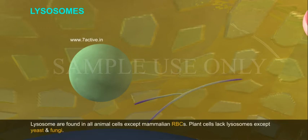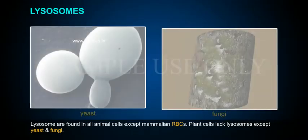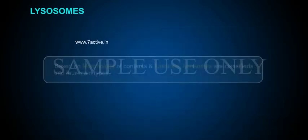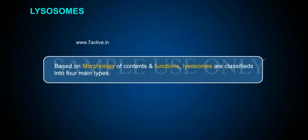Lysosomes are found in all animal cells except mammalian RBCs. Plant cells lack lysosomes, except in yeast and fungi. Based on the morphology of contents and functions, lysosomes are classified into four main types.